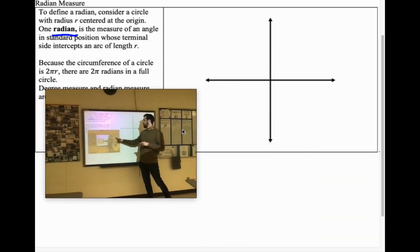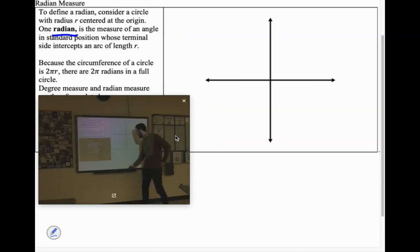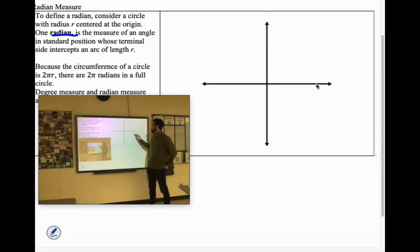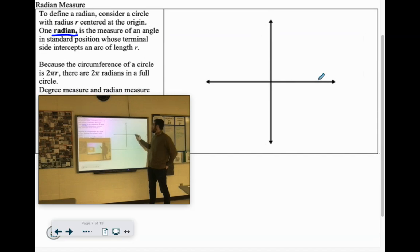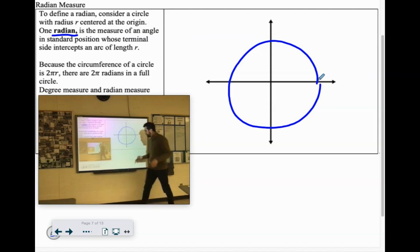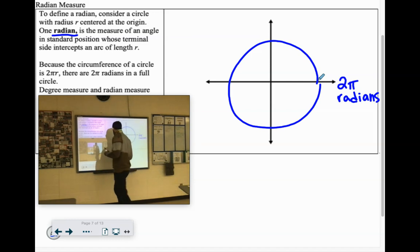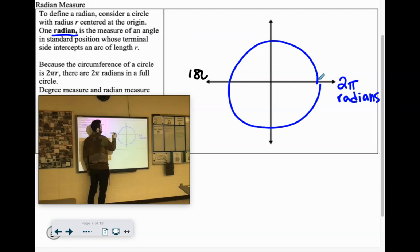So I would add a full circle is 2π radians. And again, that is derived from the circumference formula. One half of the circle, which is 180 degrees, would be half of 2π radians. So 180 degrees would just be 1π radians.